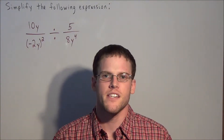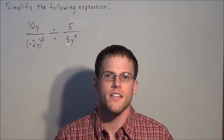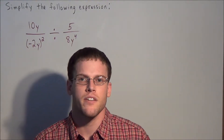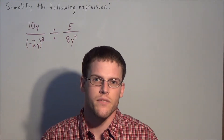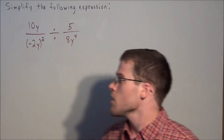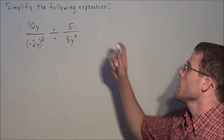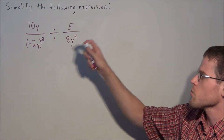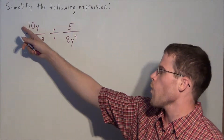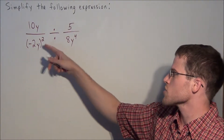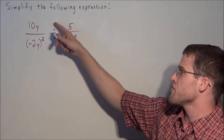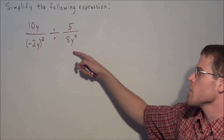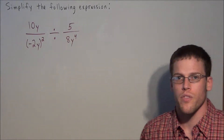Hi, my name is Vincent and today I want to take a look at simplifying algebraic expressions involving fractions. We have to simplify the following expression: 10y over negative 2y squared, divided by 5 over 8y to the 4th.